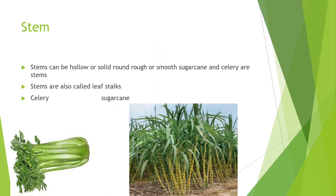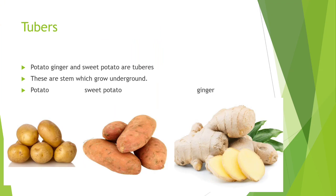Stems can be hollow and solid, round, rough, or smooth. Sugar cane and celery are stem vegetables. You will notice that sugar cane is a stem — the plant is hard and provides support. Tubers — potatoes, ginger, and sweet potatoes — are underground plant parts. Ginger, sweet potato, and potato all grow underground.